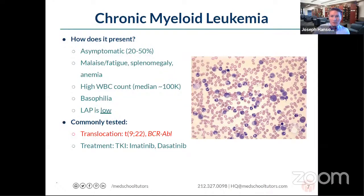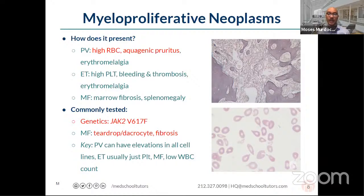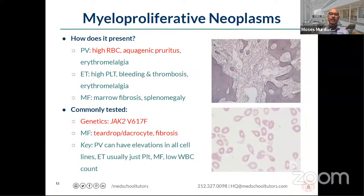Moving on from AML and CML, myeloproliferative neoplasms shift focus away from white cells to the other two major lineages within the myeloid compartment: red blood cells, platelets, and the bone marrow itself. Big picture: we have a neoplastic clonal process presenting primarily with abnormalities in red cells and platelets, as well as fibrosis of the marrow.